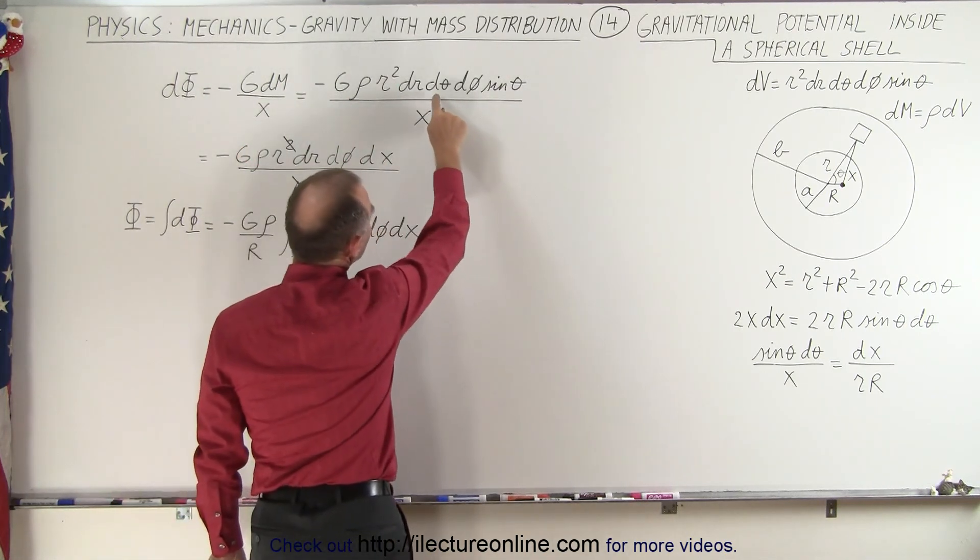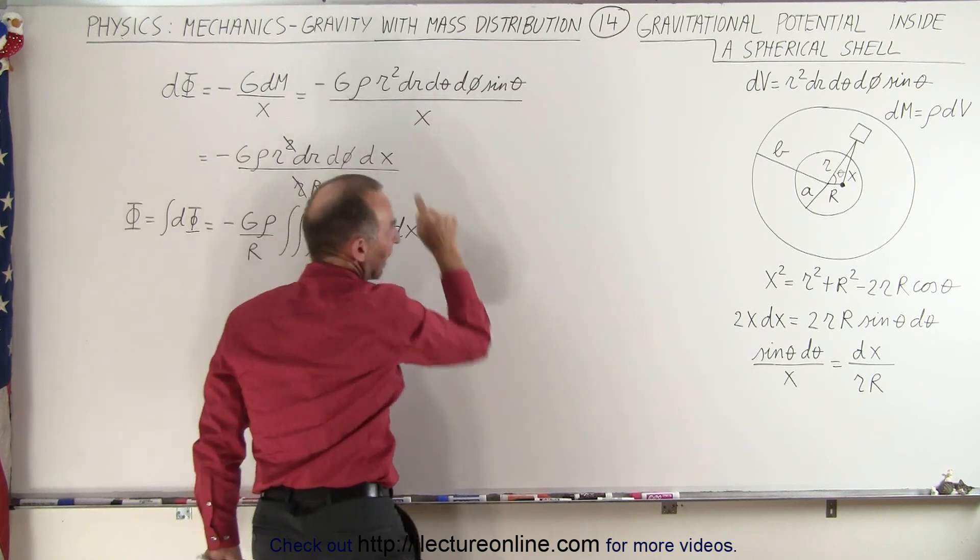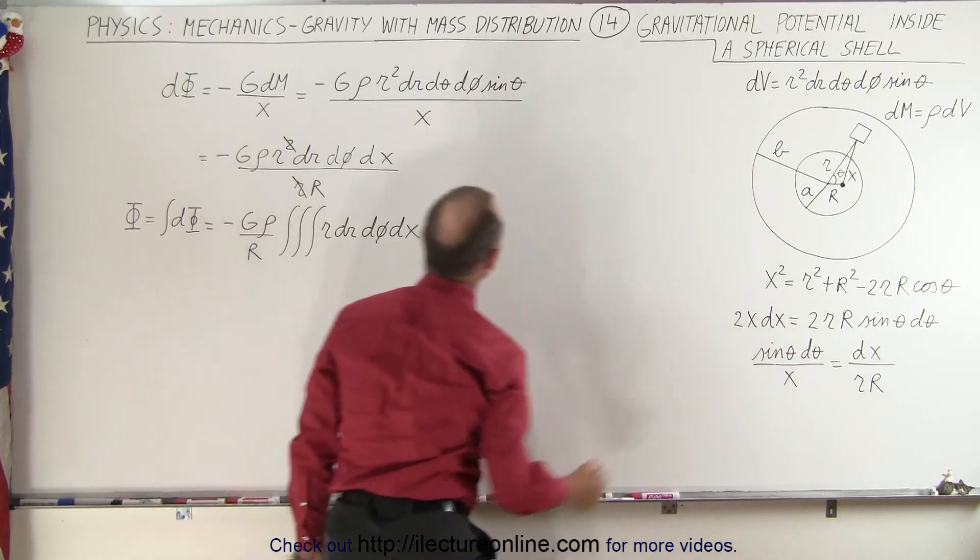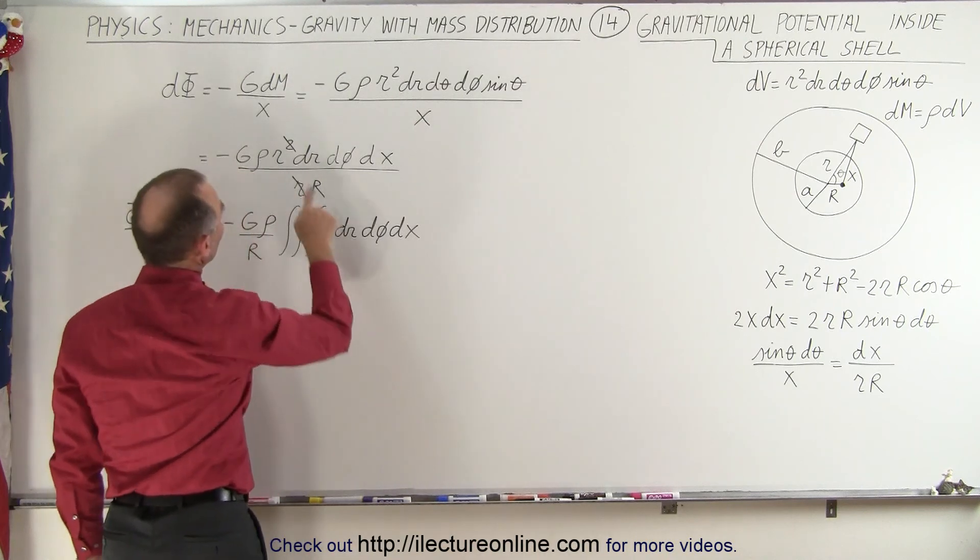But then we're going to take d theta sine of theta divided by x and replace it by dx over r times capital R. So we end up with